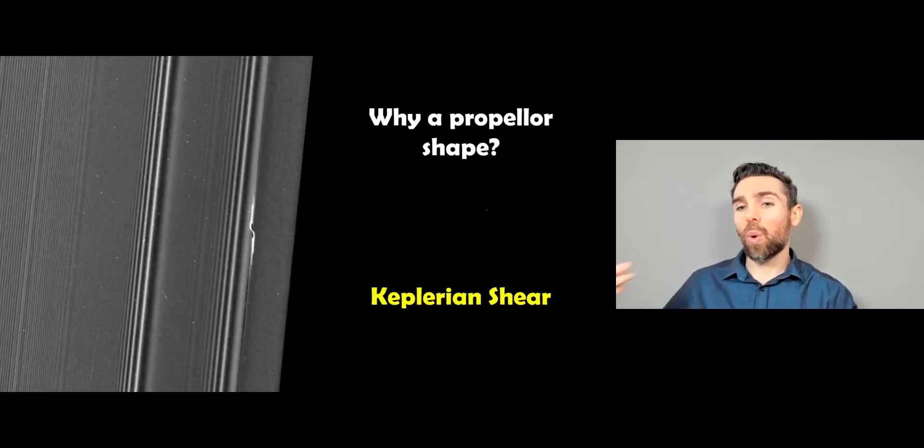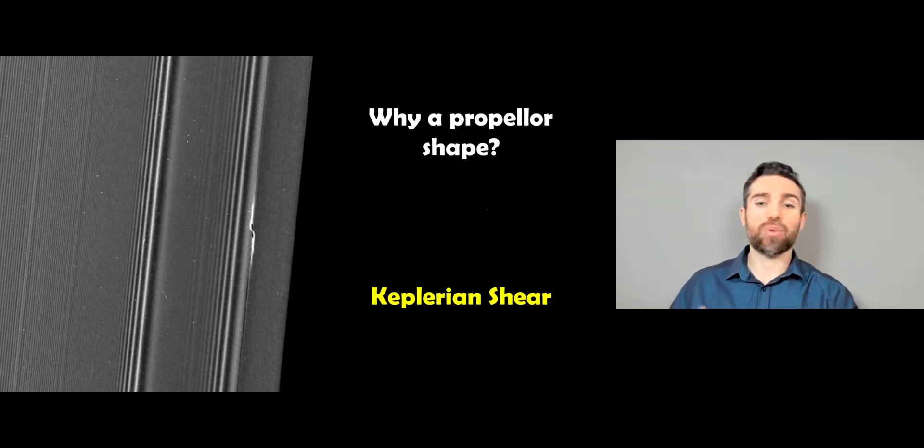So why is it a propeller shape? Well, the first thing we need to mention is Kepler and shear. And that probably doesn't mean a lot. But the thing we have to think about with Saturn's rings is it's a shearing flow. Or what that actually means is the inner part of the ring is orbiting faster than the outer part. So you can think of it as like a shearing flow of particles. And because of that, you get these characteristic shapes being formed.